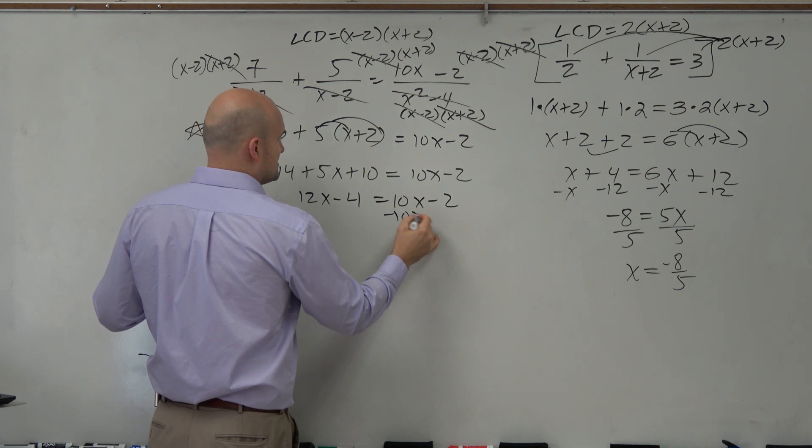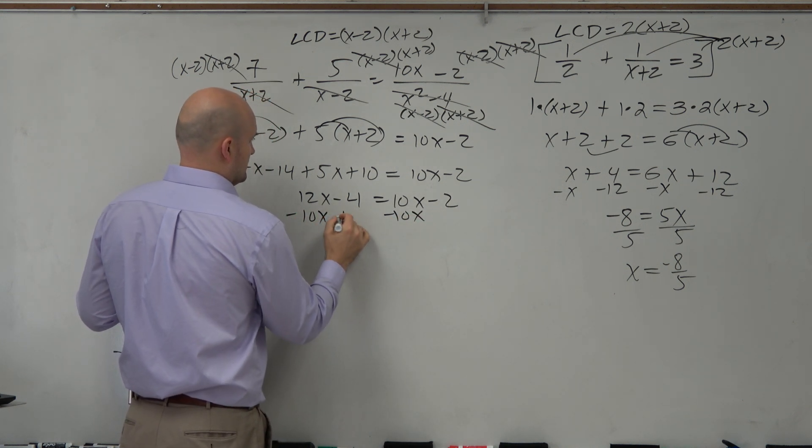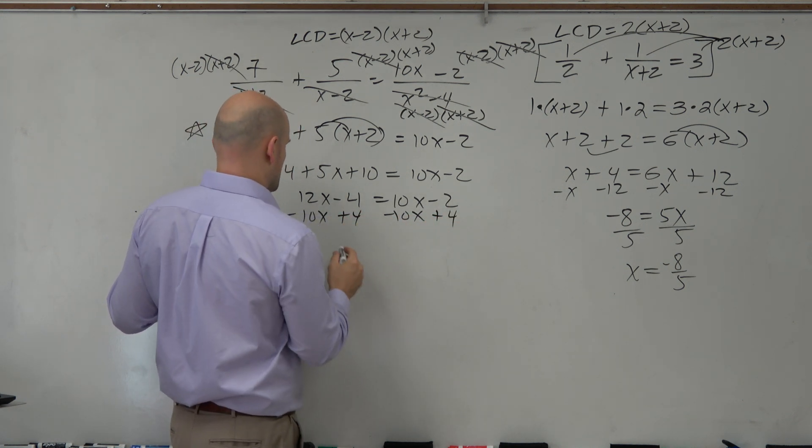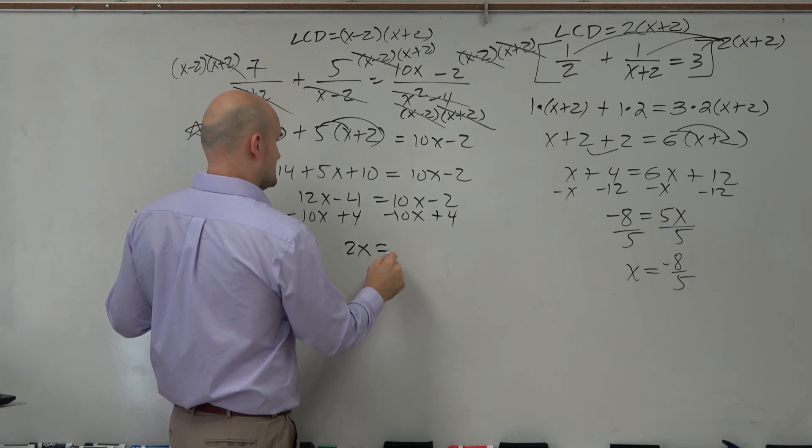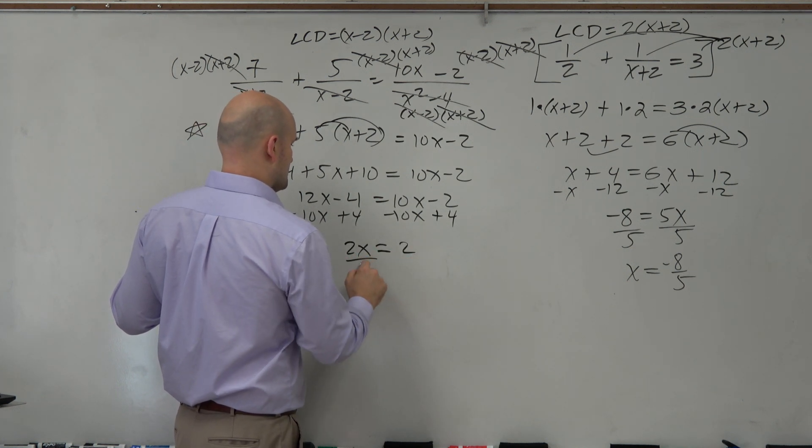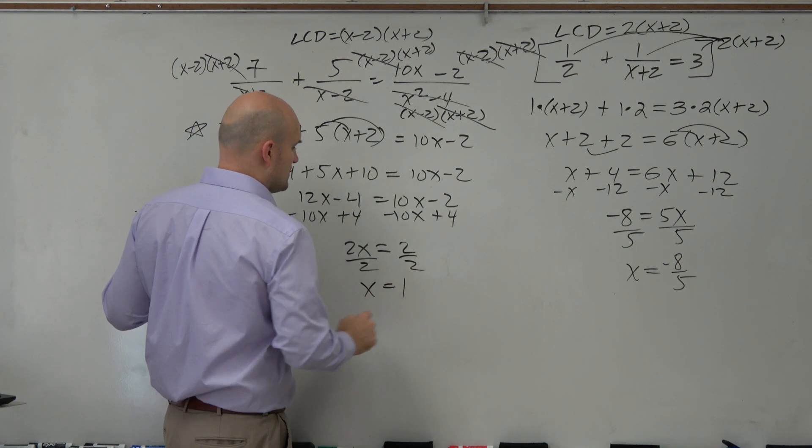Now, let's get the x's to the same side, get the values to the other side. So what I get, 2x is equal to positive 2, x equals 1.